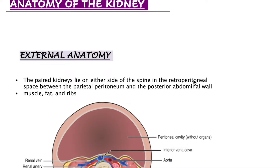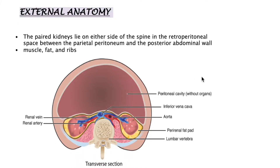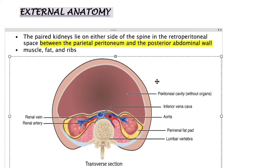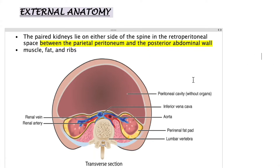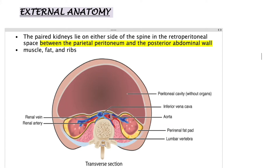Let's start with the external anatomy of the kidney. We all know there are two kidneys in the body — a pair that lie on either side of the spine. They are located in the retroperitoneal space, which is between the parietal peritoneum and the posterior abdominal wall, and they are well surrounded by muscle, fat, and ribs.